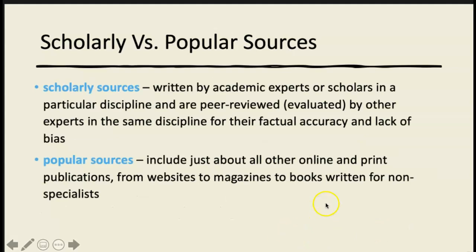Scholarly sources are written by academic experts or scholars in a particular discipline. They are peer-reviewed — evaluated by other experts in the same discipline for factual accuracy and a lack of bias. This is versus popular sources, which include just about all other online and print publications: websites, magazines, and books written for non-specialists. You want to be sure you're focusing on scholarly sources.